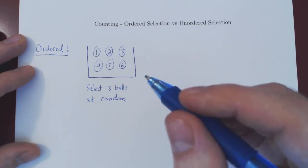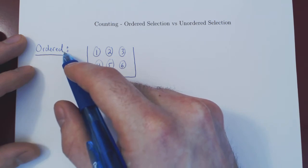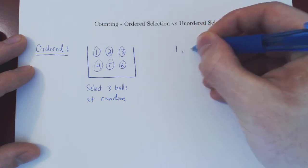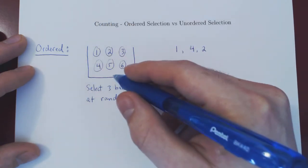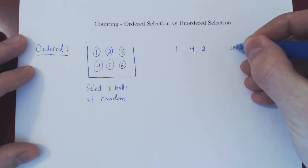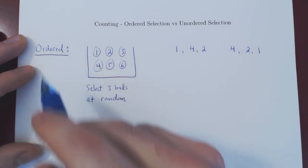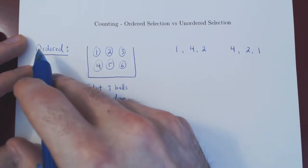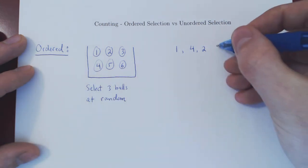Suppose we are considering an ordered selection. You select three balls at random — suppose you draw one first, then four, then two. You put them back in so you have the six balls again, and you draw three balls at random one more time. Suppose now you draw four, then two, then one. When you have an ordered selection, you keep track of which element was selected first, second, third. So under an ordered setup, these two events are considered to be different.